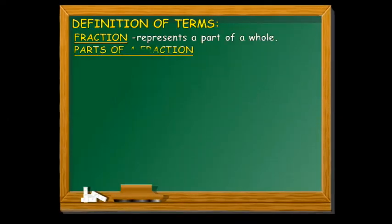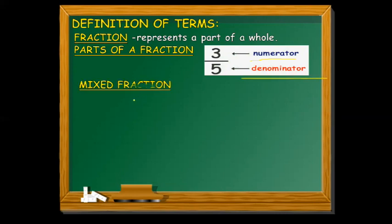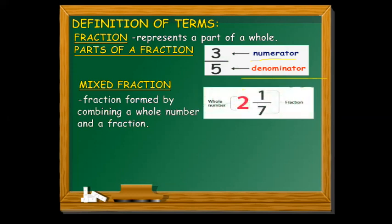Let's have a review of definitions. A fraction represents a part of a whole, and it has a numerator and a denominator. A mixed number or mixed fraction is a fraction formed by combining a whole number and a fraction — this part is the whole number and this part is the fraction.